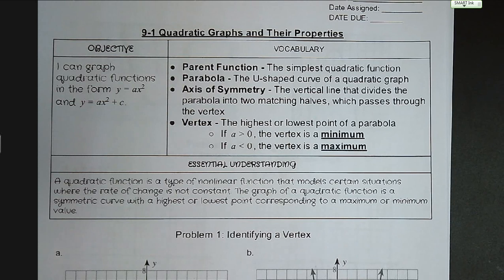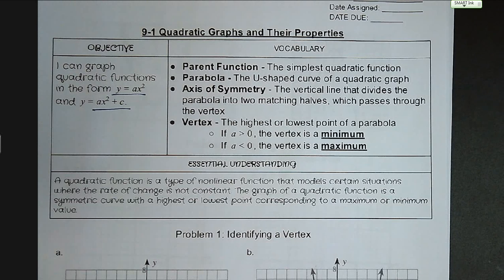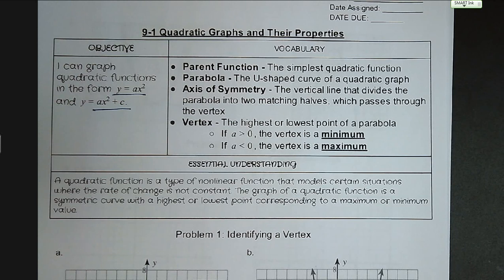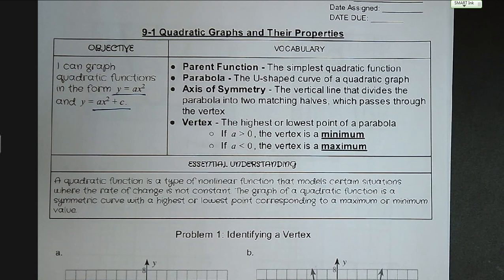Our vocabulary terms for today: parent function, which is the simplest quadratic function. Parabola is the u-shaped curve of a quadratic graph. The axis of symmetry is the vertical line that divides the parabola into two matching halves, which passes through the vertex. The vertex is the highest or the lowest point of a parabola. If a is greater than 0, the vertex is a minimum. If a is less than 0, the vertex is a maximum. A quadratic function is a type of nonlinear function that models certain situations where the rate of change is not constant. The graph of a quadratic function is a symmetric curve with a highest or lowest point corresponding with a maximum or minimum value.